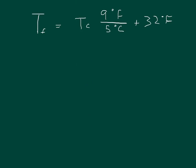The equation to use is that the temperature in Fahrenheit is equal to the temperature in Celsius times the conversion factor of 9 degrees Fahrenheit per 5 degrees Celsius, and then add 32 degrees Fahrenheit. When you do that, your Celsius units cancel out, and we're left with our units in degrees Fahrenheit. So all you have to do is plug in your numbers.